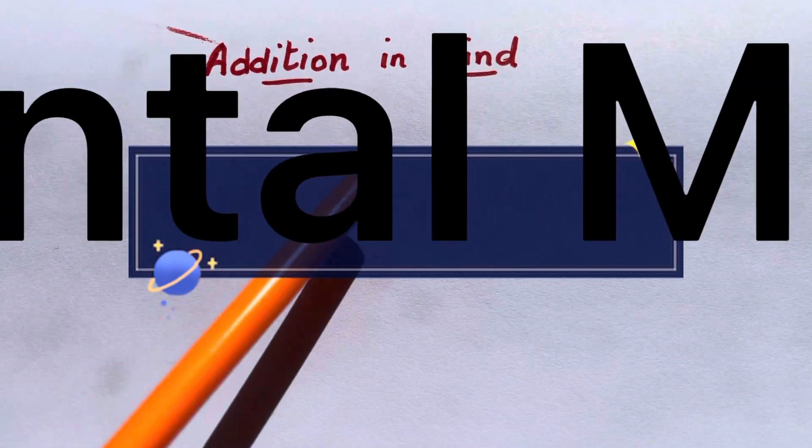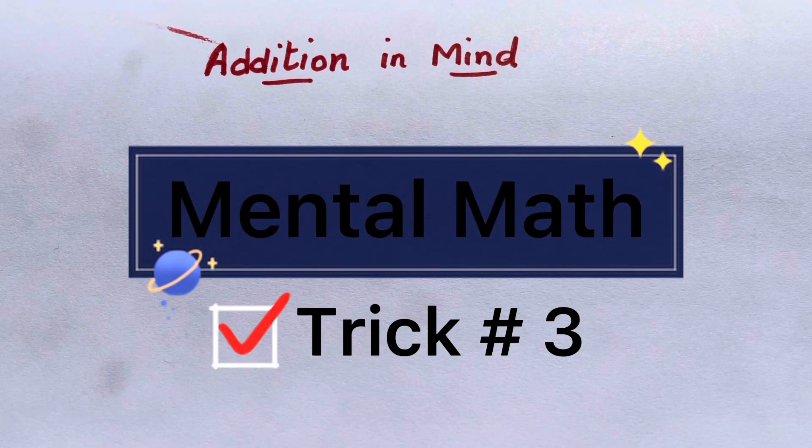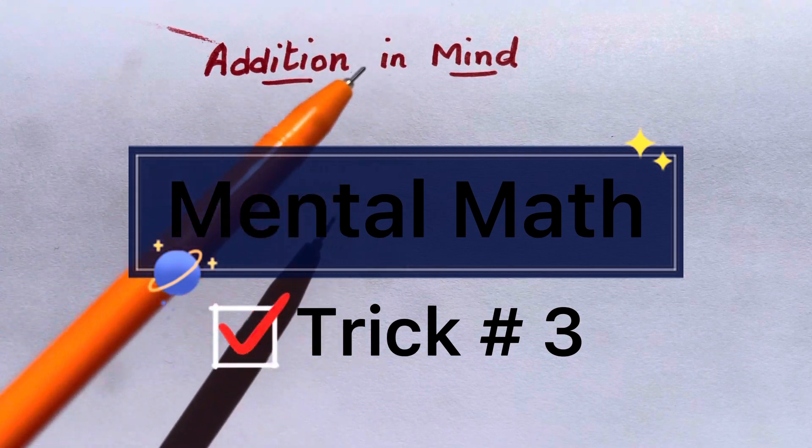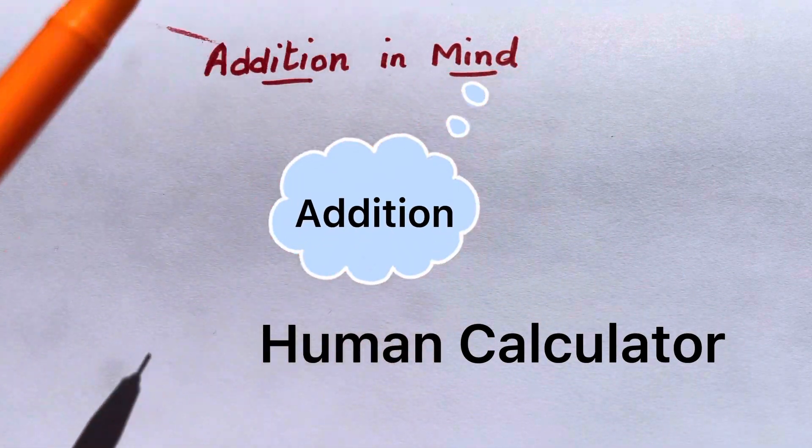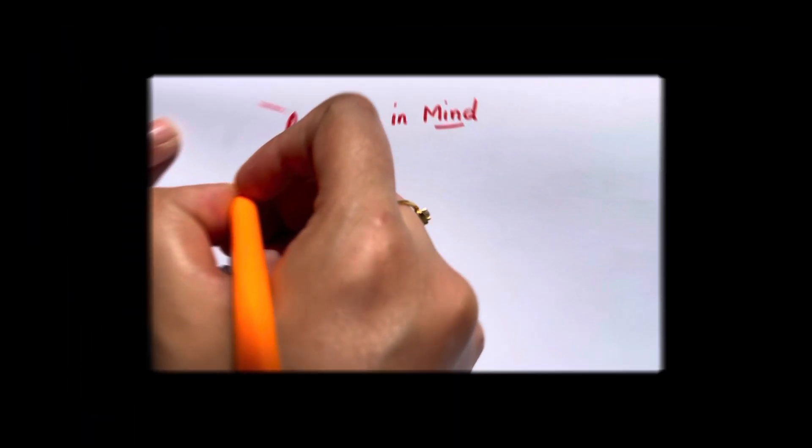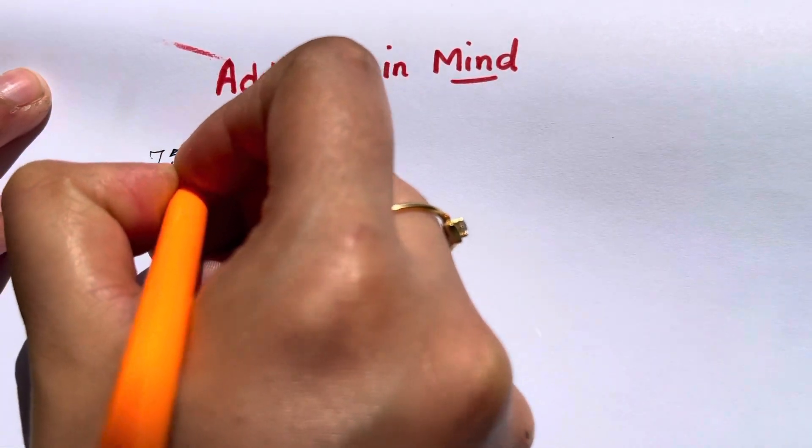Hello all geniuses, I'm back with mental math trick number three. This is related to addition - you're going to do addition in mind and your mind is going to become a human calculator. Like if you have 759 plus 496, what would you do?